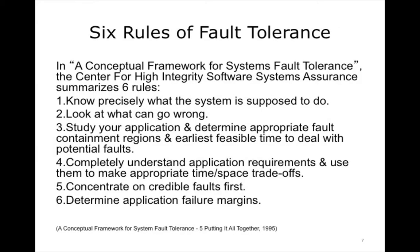Now let's discuss six rules for approaching fault tolerance in your system. The Center for High Integrity Software Systems Assurance summarizes six rules for ensuring fault tolerance. These are: know precisely what the system is supposed to do; look at what can go wrong; study your application and determine appropriate fault containment regions and earliest feasible time to deal with potential faults; completely understand application requirements and use them to make appropriate time-space trade-offs; concentrate on credible faults first; and determine application failure margins.